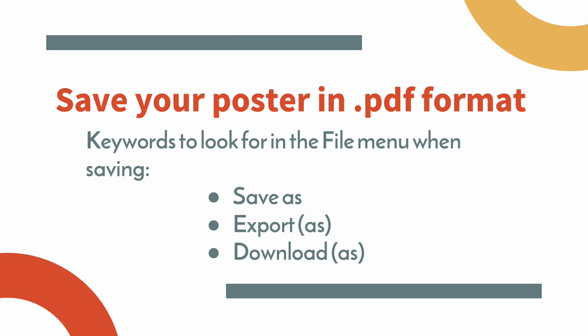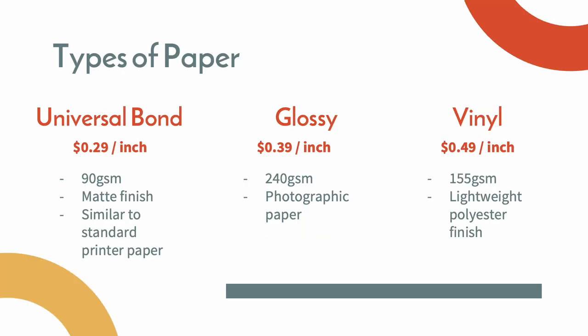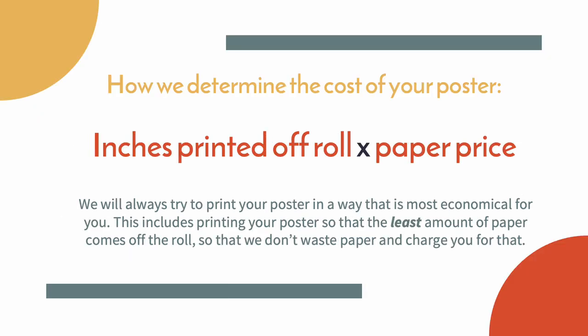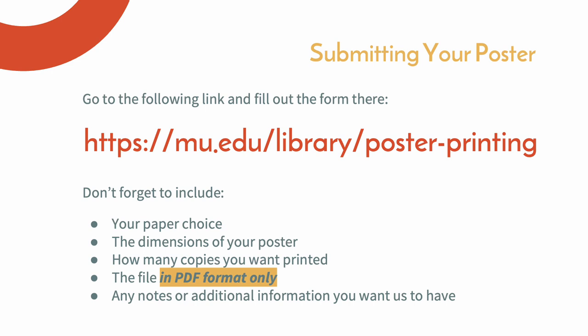Before submitting your poster for printing, ensure it is saved in the correct format. Look for keywords like save as, export, or download in the design tool you used to develop your poster. We offer three different types of paper at various price points. The cost of your poster is determined by multiplying the inches printed off the roll by the cost of the paper type. We will always try to print your poster so that the least amount of paper comes off the roll. Complete the submission form, attach your poster file in PDF format, and the lab can begin the process of printing your poster.